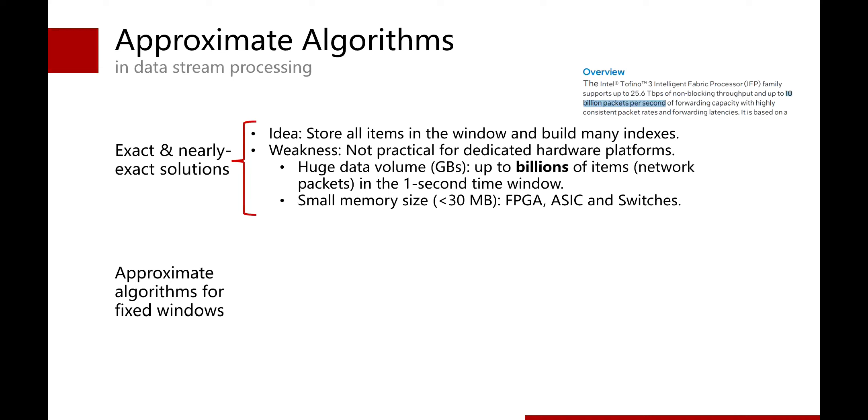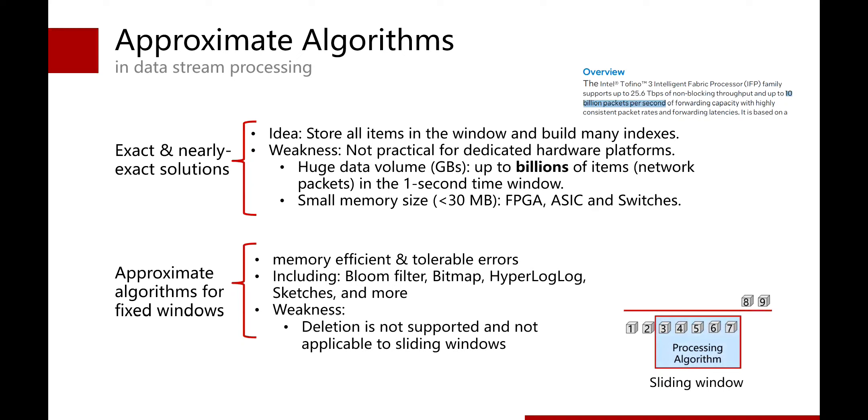When the data volume and the data speed is relatively small, the exact solutions can work well in a CPU platform. However, in the extremely high-speed scenario, it is not practical for dedicated hardware platforms. In a network switch, there are billions of items to be inserted in one second, but the memory of the switch is too small to store all items in the one window.